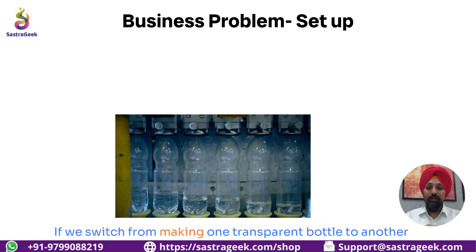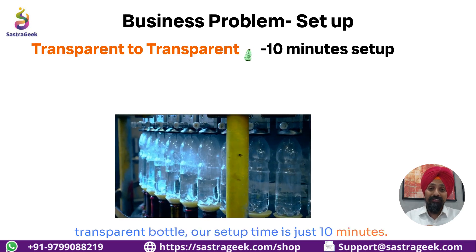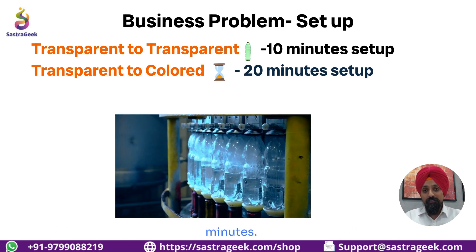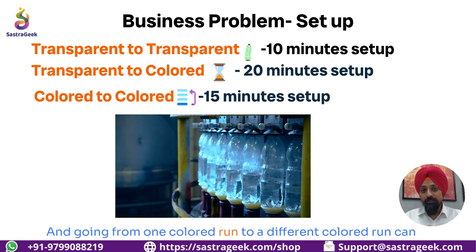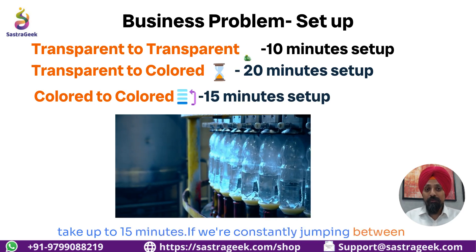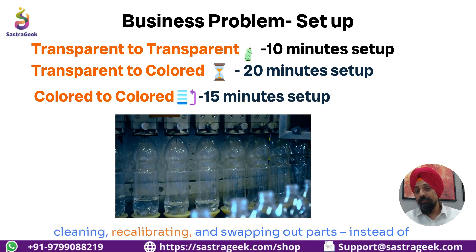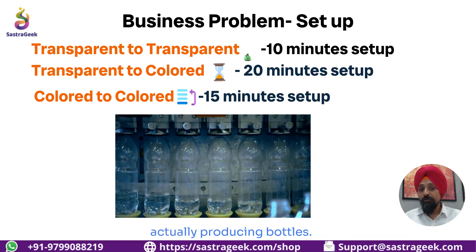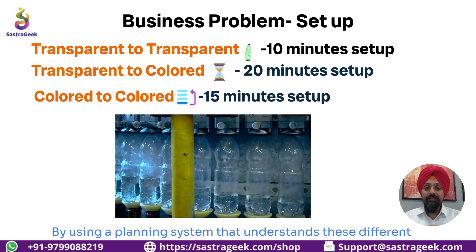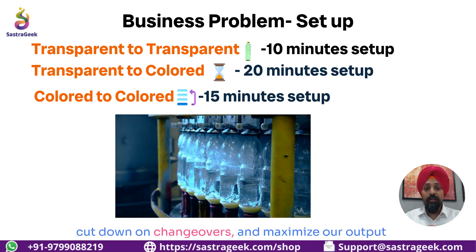If we switch from making one transparent bottle to another transparent bottle, our setup time is just 10 minutes. But if we move from transparent to colored, that jumps to 20 minutes. And going from one colored run to a different colored run can take up to 15 minutes. If we're constantly jumping between colored and transparent bottles, we spend more time cleaning, recalibrating, and swapping out parts, instead of actually producing bottles.